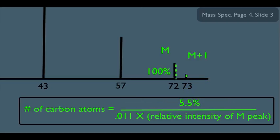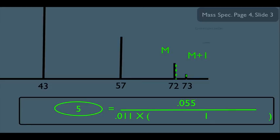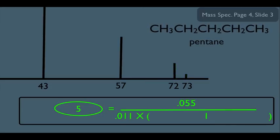Since we're plugging in a percent, we enter it in decimal form as 0.055. The denominator is the relative intensity of the M peak, which we set as 100%, giving a decimal value of 1. Performing the calculation: 0.055 divided by (0.011 × 1) equals 5. We know our sample is pentane, and it does have 5 carbons — confirming this is a very valuable formula.